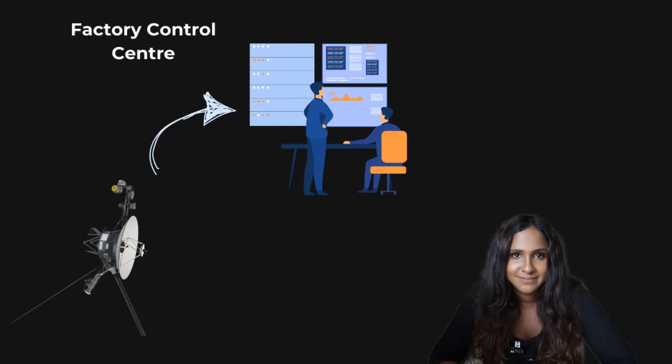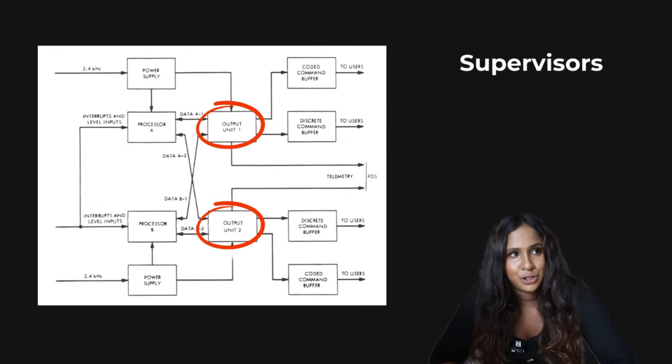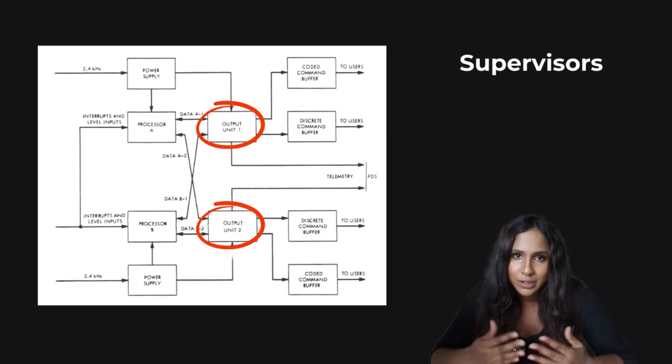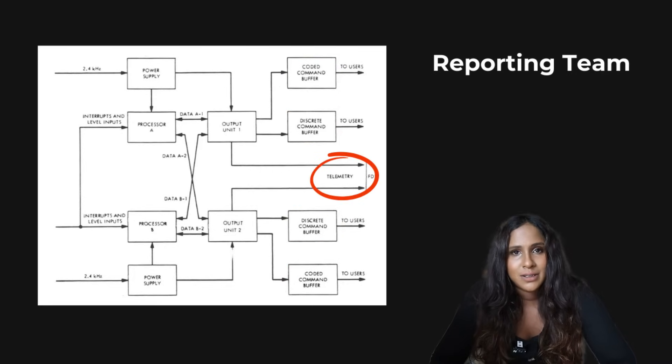So to recap, the Voyager system is essentially like a factory control center. The processors are the managers making decisions. The output units are the supervisors, just ensuring that the instructions are delivered to the workers or the different subsystems. The command buffers, I would say, are like to-do lists, just organizing tasks before they're carried out. And the telemetry system is the reporting team. It sends updates about the status to its headquarters, which is Earth.